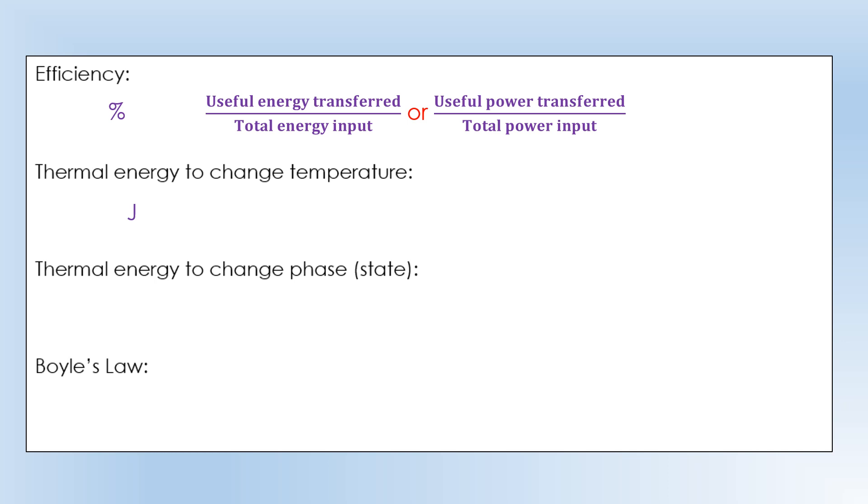Thermal energy to change temperature is going to be measured in joules. We're going to need the mass, the specific heat capacity, and the temperature change. So that's the Q equals MC delta T equation.